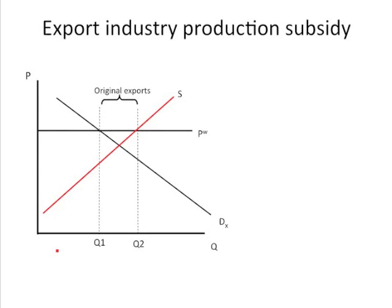In this instance, we start out with the initial exports of Q1 to Q2 and the original world price. And now, instead of paying firms to export the product, we're simply going to defray some of the production costs of firms that make this product in the domestic market. We're going to have that reflected in a fall in the marginal cost of production because the government pays some of that cost.